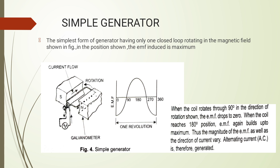The simplest form of generator has only one closed loop rotating in the magnetic field. At maximum EMF, the coil is at 90 degrees of rotation. This represents the magnitude of the EMF as well as the direction of the current — generating an alternating current.